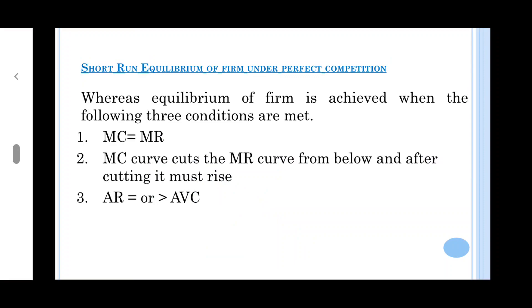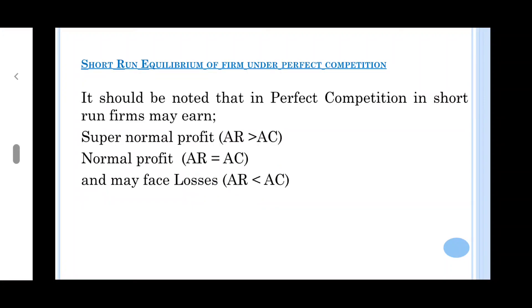Three, average revenue is equal to or greater than average variable cost. Now we will understand the equilibrium condition of perfect competition. However, it should be noted that in perfect competition in the short run,